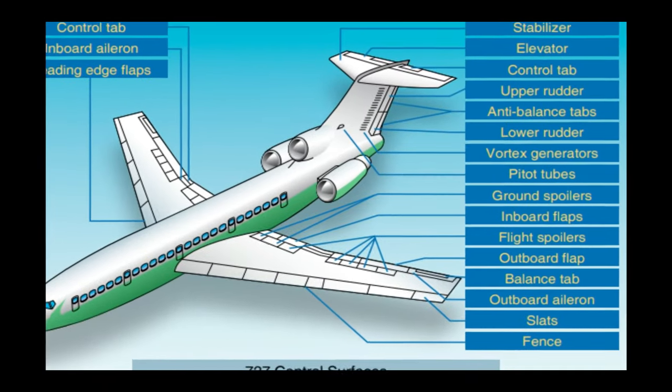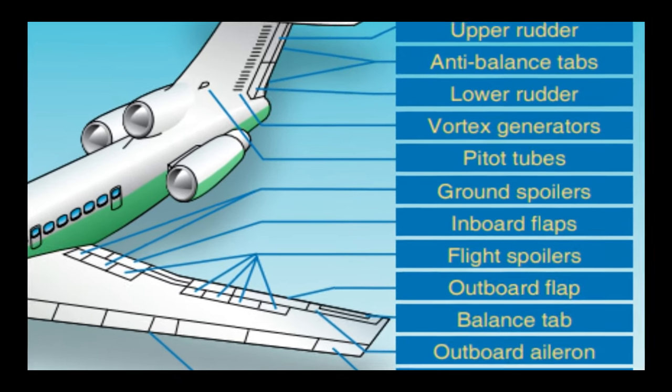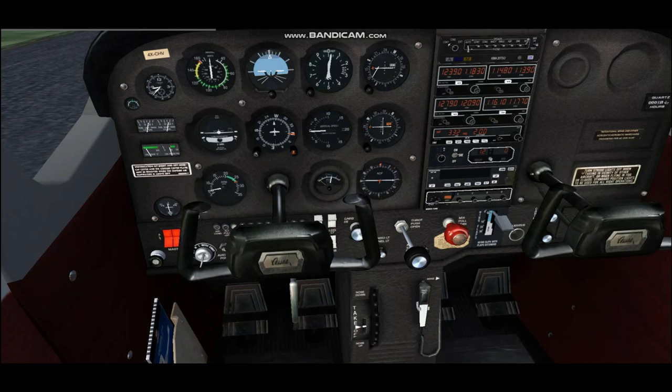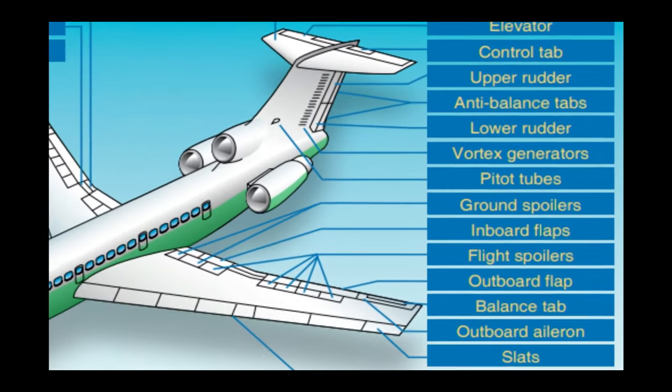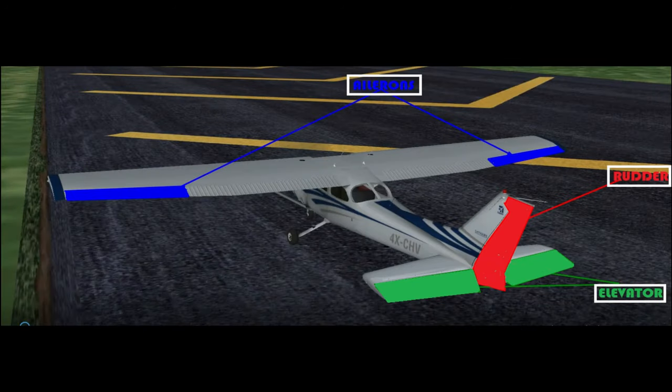Wing flaps, leading edge devices, spoilers, and trim systems constitute the secondary control system and improve the performance characteristics of the airplane or relieve the pilot of excessive control forces. I will leave these secondary flight controls for future lessons. In this video, let's focus on primary flight controls.